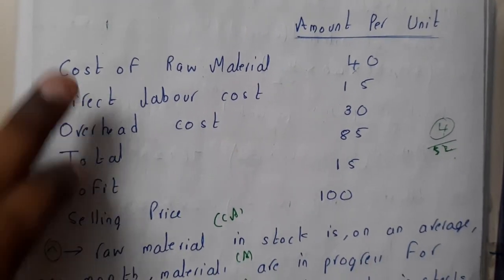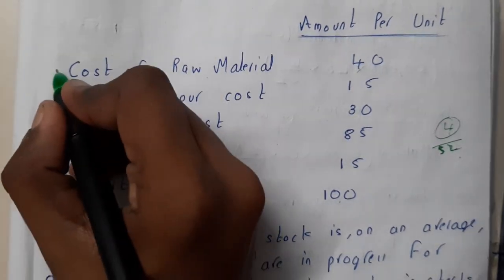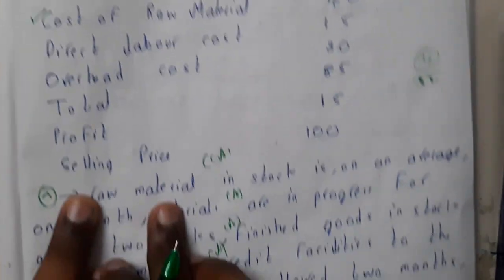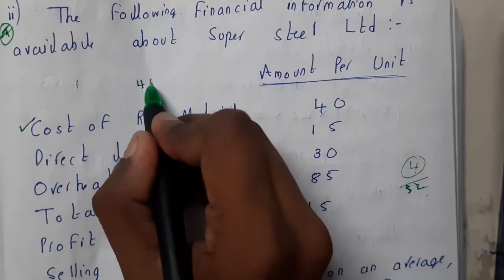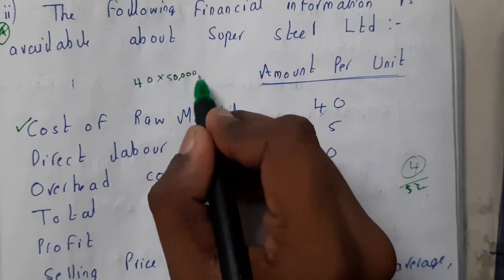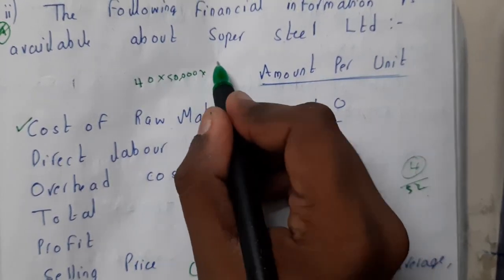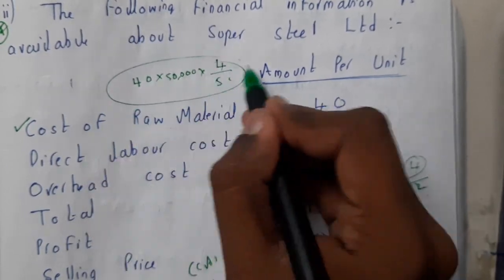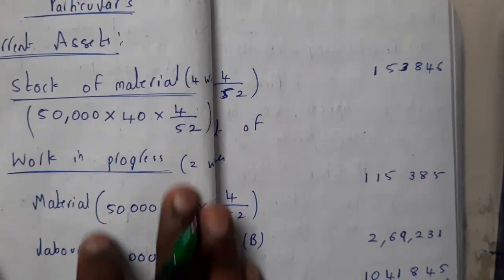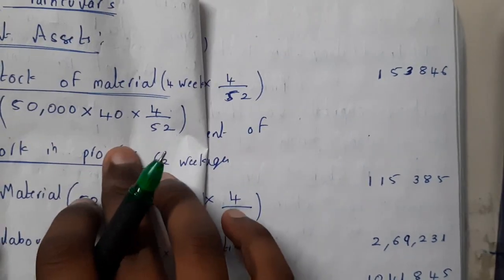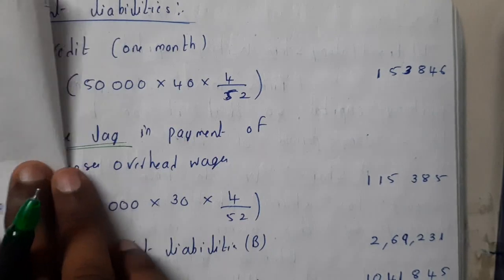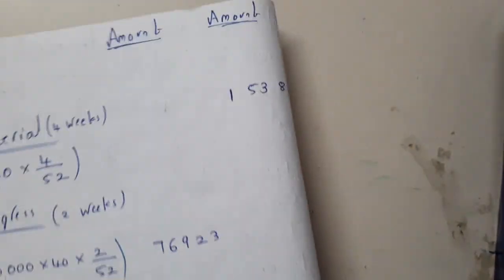For raw materials, there is only one entry: raw materials in stock on average for one month. The value is 40 (cost per unit) into 50,000 units into 4 by 52 (one month in weeks). Stock of material for four weeks equals 50,000 into 40 into 4 by 52, giving us 1,53,846 rupees.